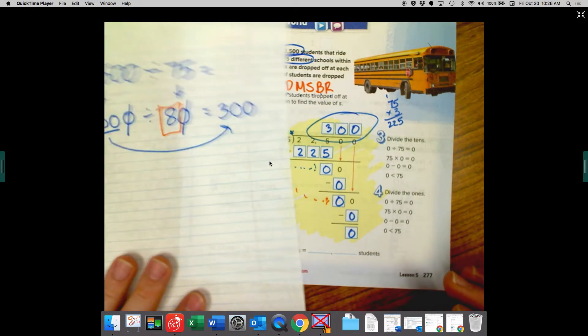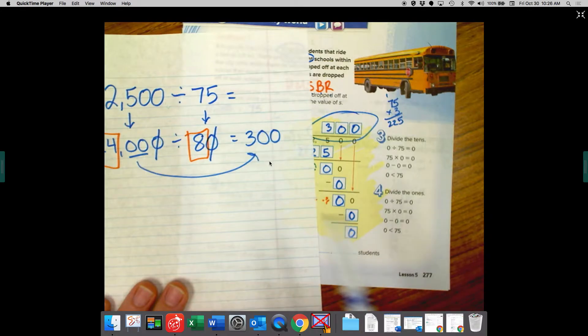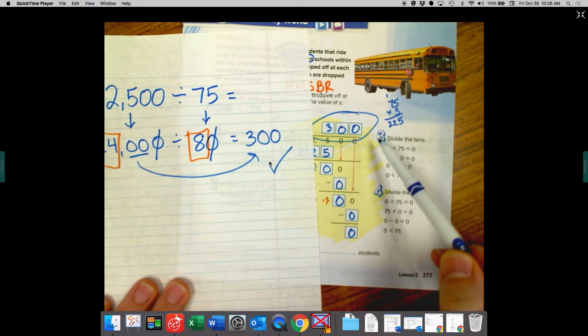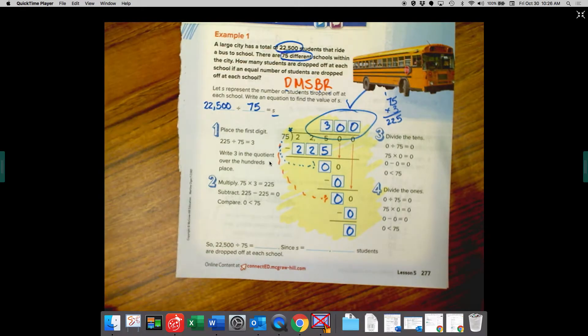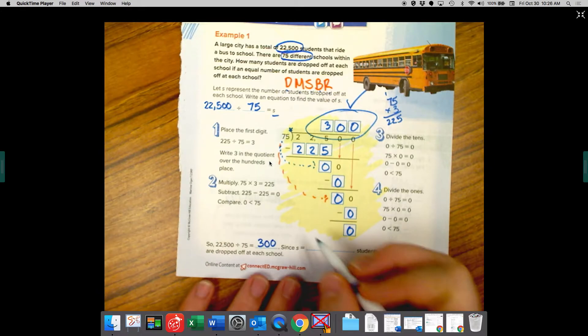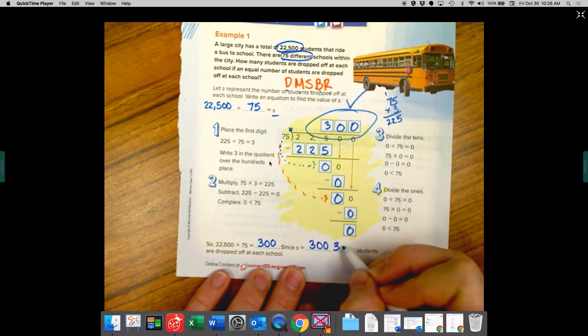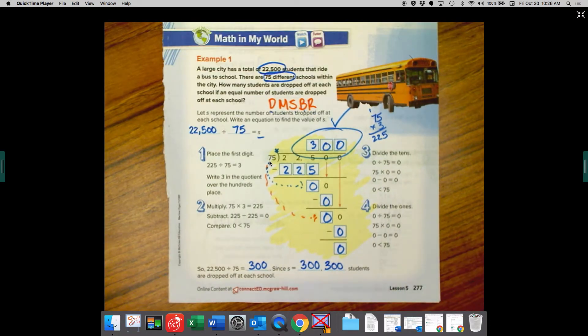Wait a second. Our estimate was 300. That worked out really well this time. So our estimate matched up exactly with our real answer, which was 300. So if we look at the bottom, we're going to fill in our blanks here, 300. Since S equals 300, there are 300 students that are dropped off at each school.